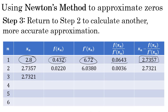x sub 2, our second estimate of 2.7357, was again applied to the formula for Newton's method that I discussed. And I found a better estimate. My third x sub 3 better estimate was 2.7321.